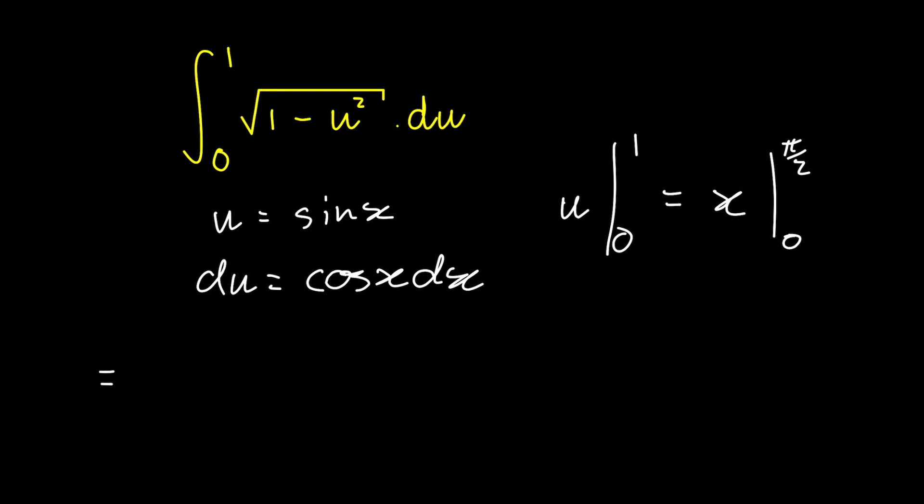So now we can rewrite this integral in terms of x. So we're integrating now from 0 to pi by 2 of the square root of 1 minus sine squared of x times by cosine of x dx.